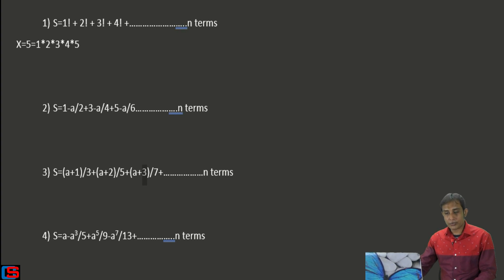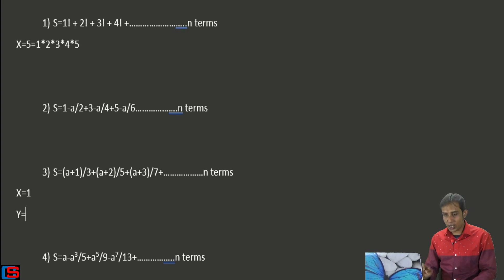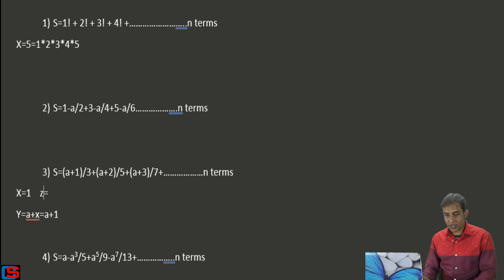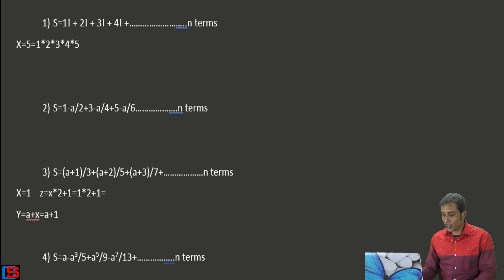To understand how the pattern is generated, suppose x equals 1. Then y equals a plus x, which is a plus 1. For the denominator, declare z equals x into 2 plus 1. With x equal to 1, that gives 1 into 2 plus 1 equals 3, so we divide by z which is 3.